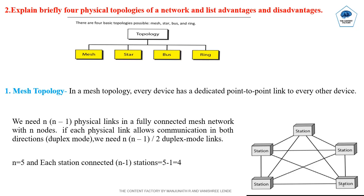If it is in duplex mode, we require N×(N-1)/2 links. If N devices are present in the mesh topology, each station is connected to N-1 stations. For example, as given in the figure, there are 5 stations, so each station is connected to N-1, that is 5-1 equal to 4 stations.